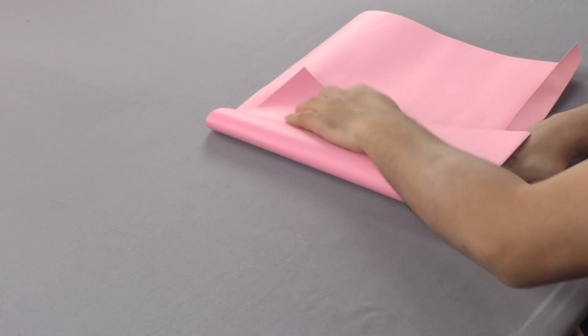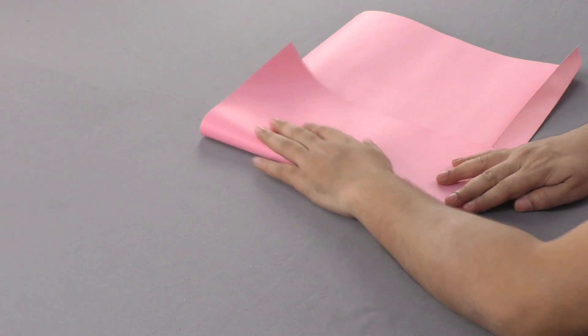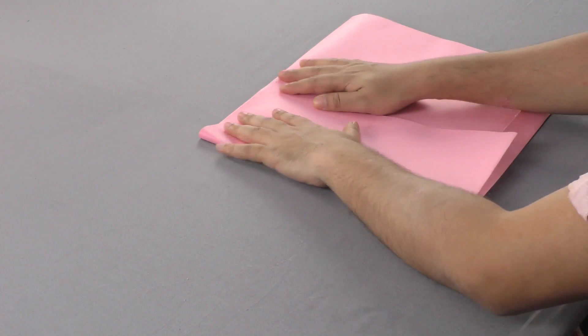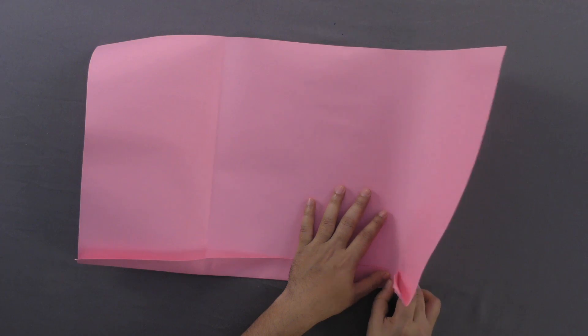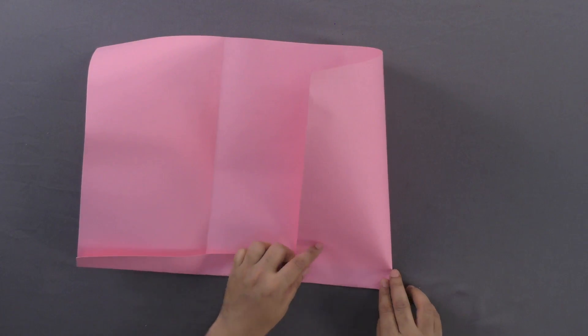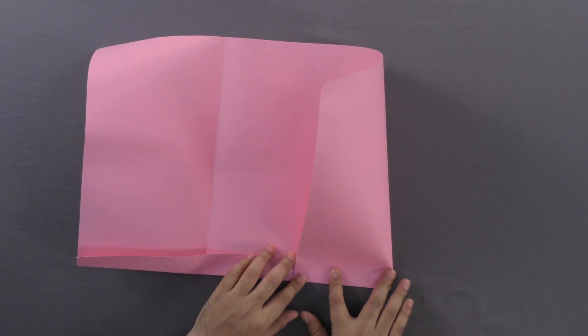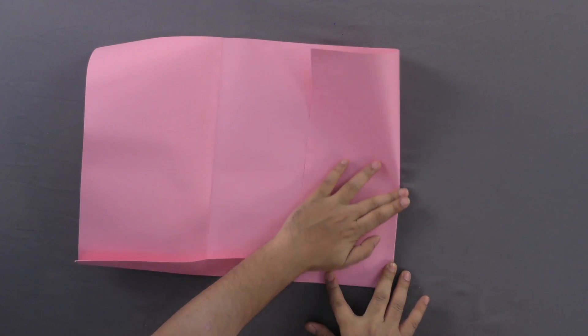Make two folds lengthwise to form a crease on each side. Now make one fold each breadthwise on the open sides to form two creases.